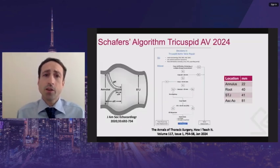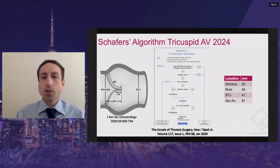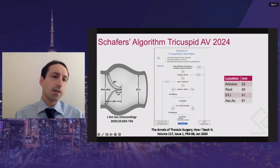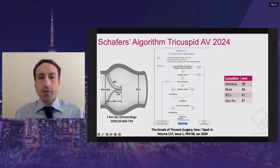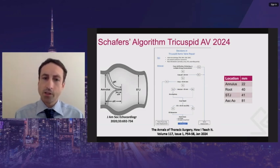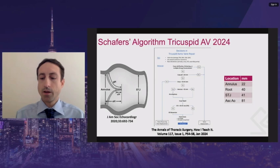Dr. Schaefer published his algorithm for tricuspid valve repair in 2024. Patients with calcified, thickened, or multiple large perforations of their leaflets, or with cusp geometric height less than 18 millimeters, received replacements — with geometric height defined as the height of the leaflet measured up to the free margin for each individual cusp. If they had a dilated sinus, they received valve-preserving root replacement; dilated annulus received annuloplasty; dilated STJ received STJ reduction; with remaining pathologies addressed by cusp repair, ensuring effective height was at least 0.45 times the geometric height and all cusp free margins were at the same level. For this patient, this suggested only an ascending aorta replacement was required.